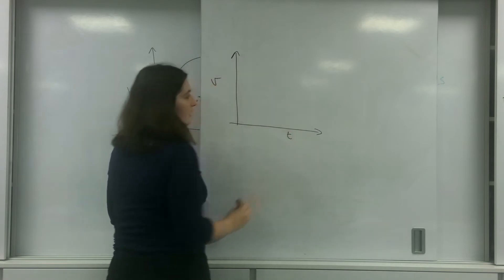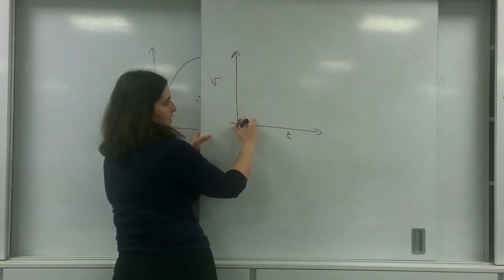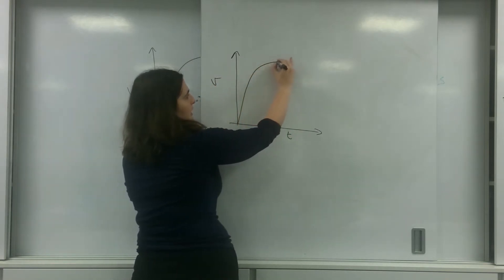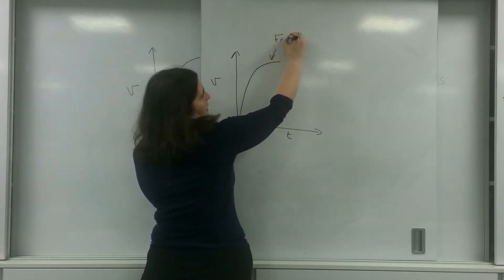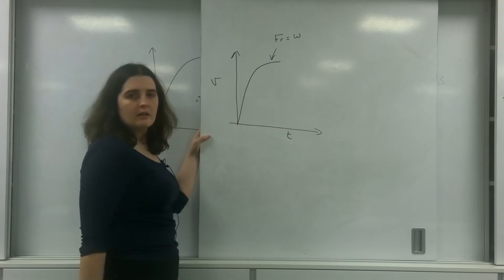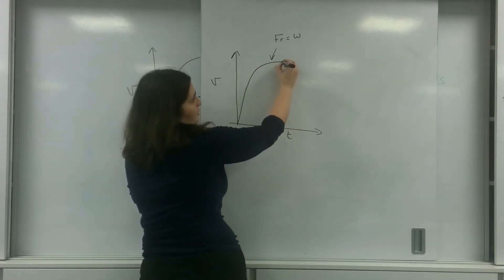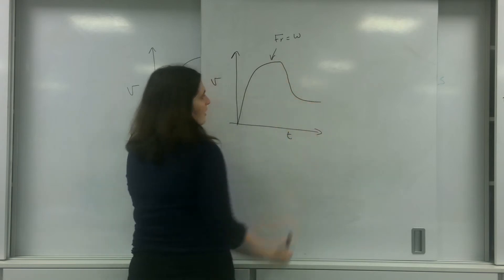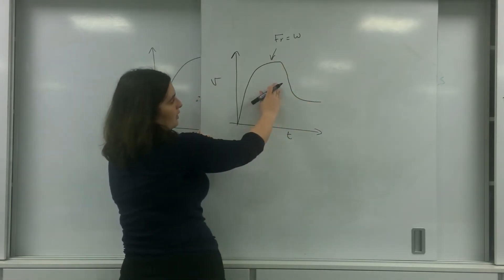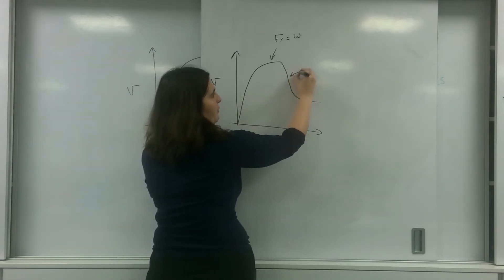Velocity and time. I would have quite a sharp incline. And then all of a sudden, I would get to a terminal velocity. So this is where my friction equals the weight. So we would go at a terminal velocity for an amount of time. Then all of a sudden, it would drop. That I would open my parachute.